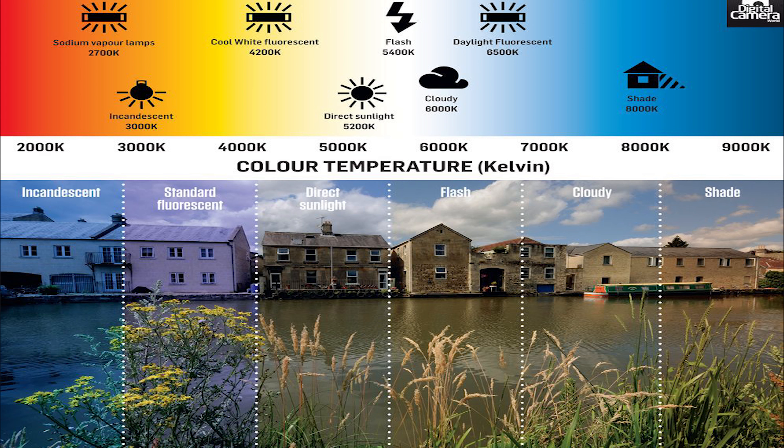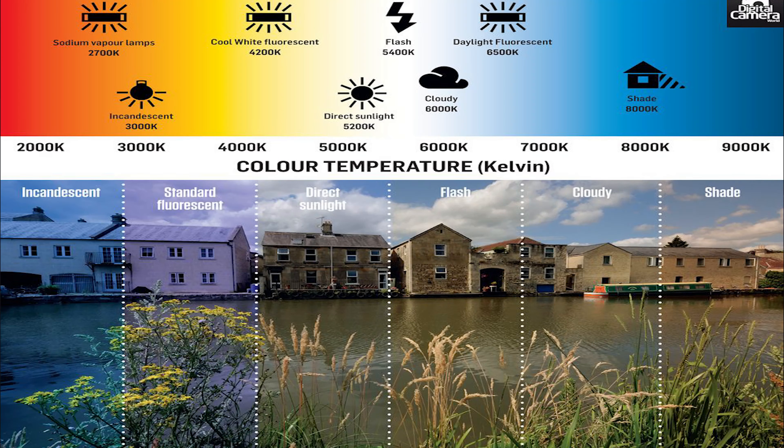On screen you can see a picture that has been corrected to different Kelvin temperatures and the effect on each portion of the photo. This image was taken at around 6,500 Kelvin, and from there each portion was corrected. As you can see, adjusting to incandescent light makes your image come out very blue. Now you're scratching your head — wait, incandescent lights are around 3,000 Kelvin and red, so why is the shot blue?